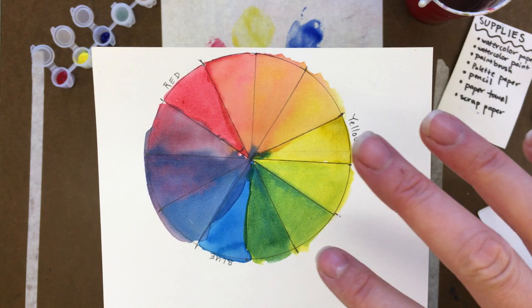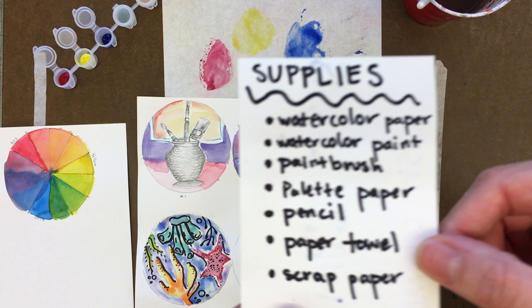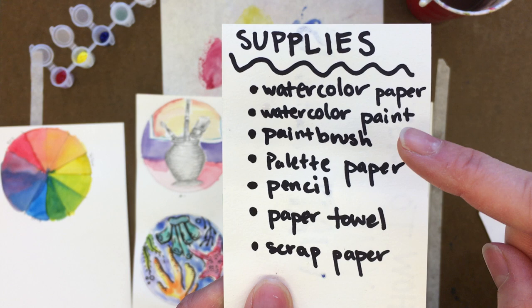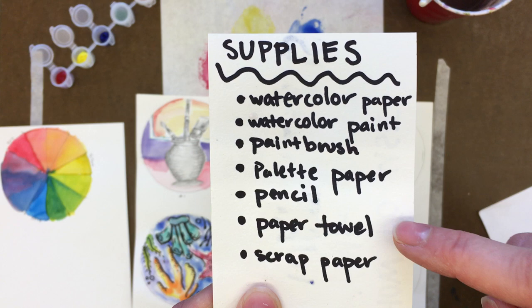So the things that you need: you will need your watercolor paper which is this paper that we've been working on, your watercolor paint, paintbrush, palette paper, pencil, paper towel, scrap paper, and of course a cup of water.